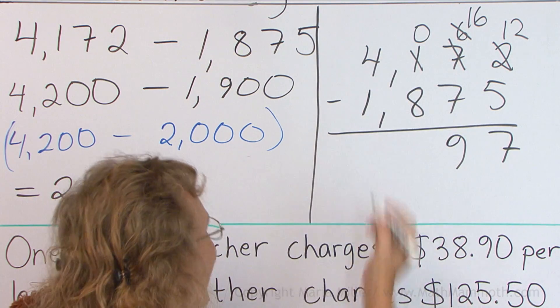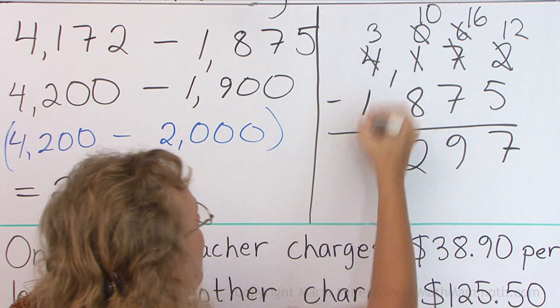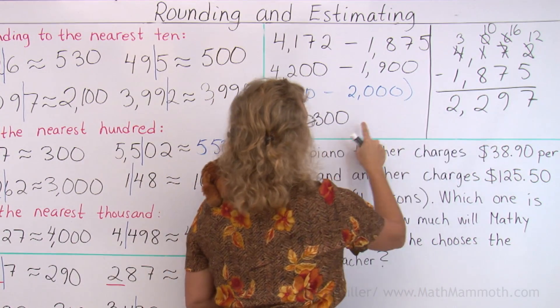Zero minus eight, again, regroup one more time. Ten minus eight, and then three minus one. Okay, this answer is very close to our estimate.